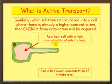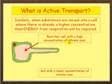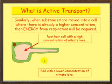Let's look at an example. Here's our root hair cell again. Inside the root hair cell, you'll already have a high concentration of what's called nitrate ions. Plants need nitrate ions for growth. Outside in the soil, there'll be some nitrate ions, but there'll be a lower concentration.